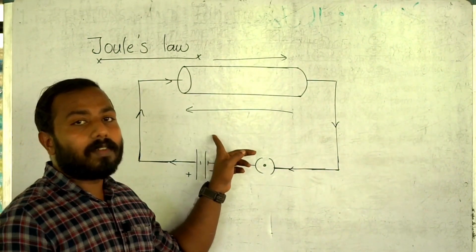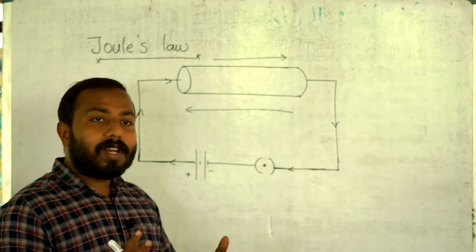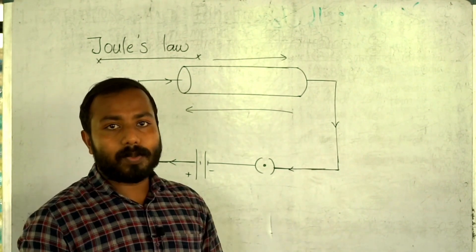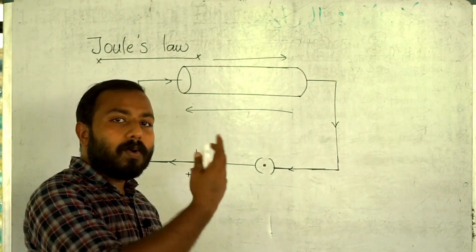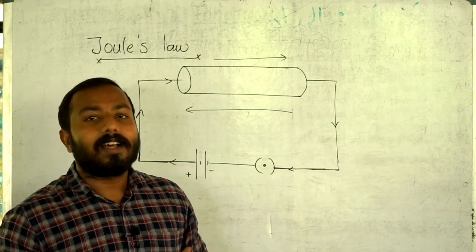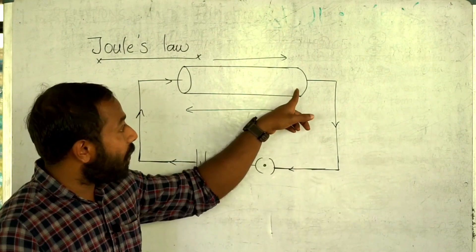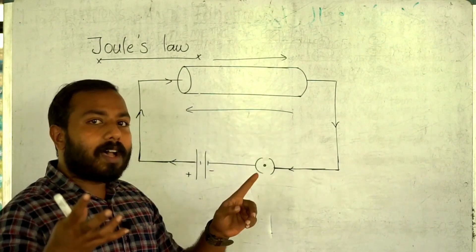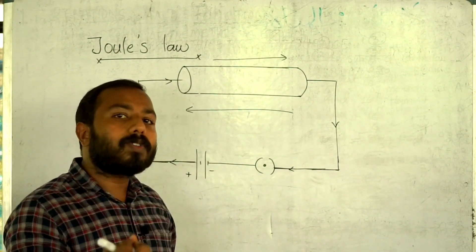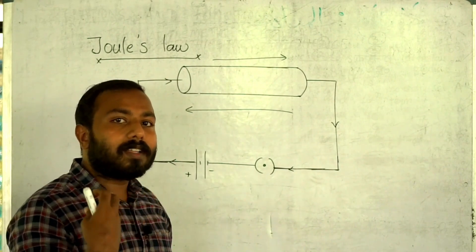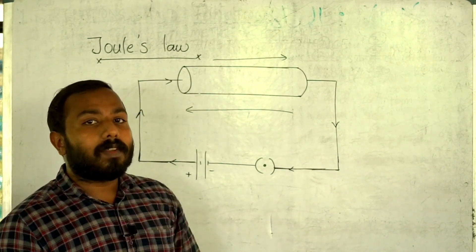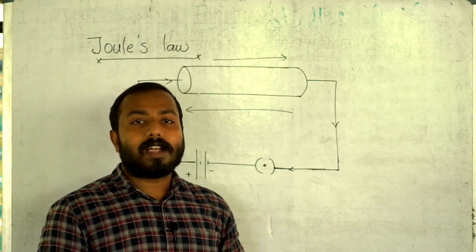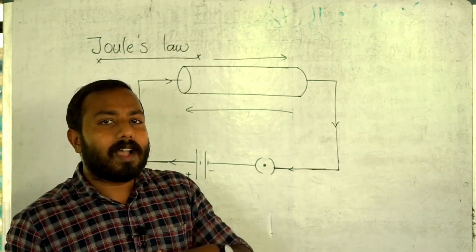Now we are going to discuss how heat is developed. Heat is developed because of resistance. What is resistance? Resistance opposes the flow of current. When electrons flow through a resistor, they collide, and that current flow depends on factors we will cover next.